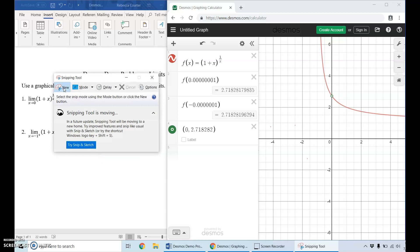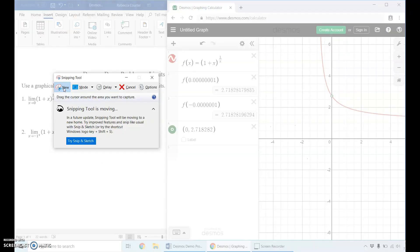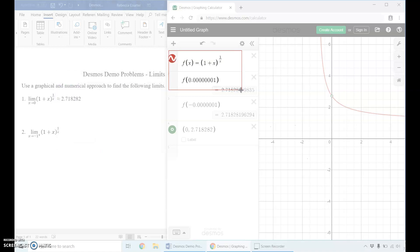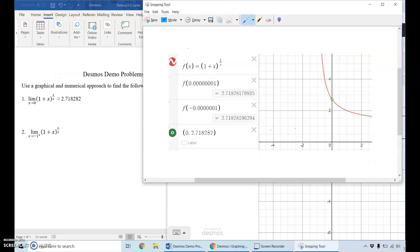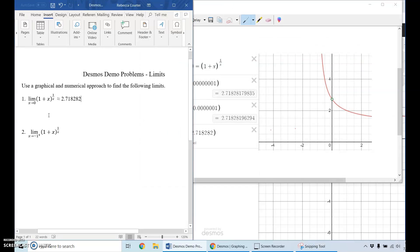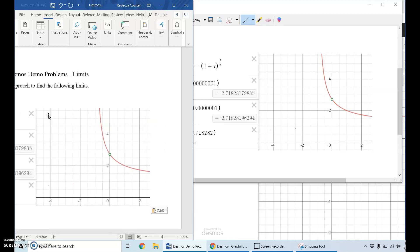And I can use the snipping tool. I can click new, and it allows me to create a box around exactly what I want to copy. From my screen, I copy it with Ctrl-C, I then paste it in my Word document with Ctrl-V, like that.